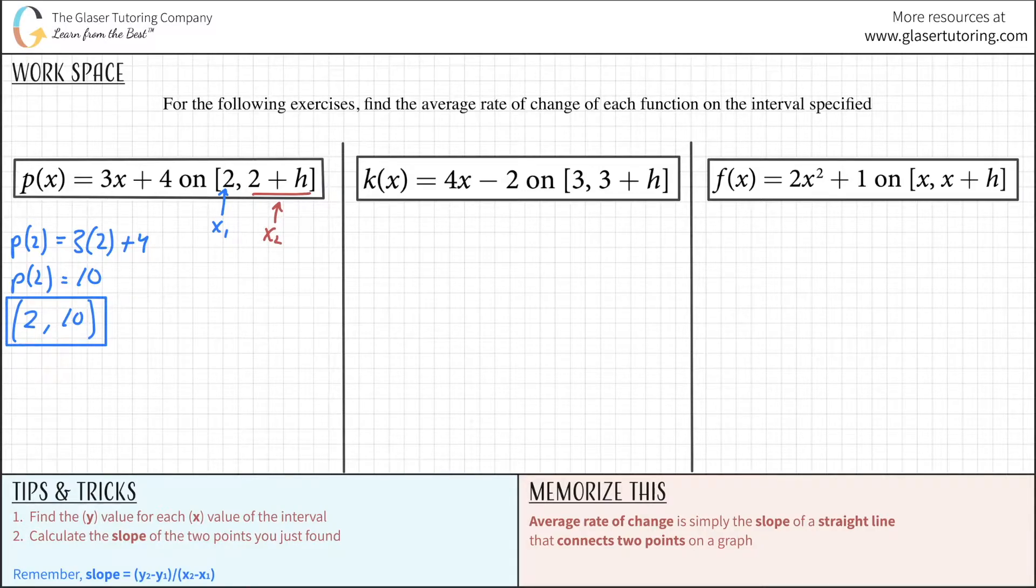Now, we can do the same thing for this set. Now, remember, all we have to do is plug this in for anywhere we see x. So, now this is going to be, I'll put it down a little lower. So, this is p of now 2 + h. Sounds funky, right? But it's not that bad. Just plug in here 2 + h for your x value.